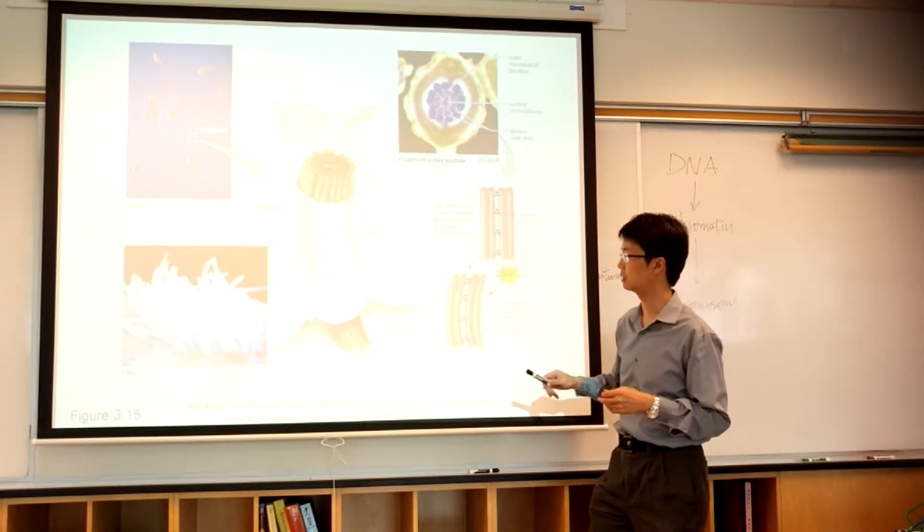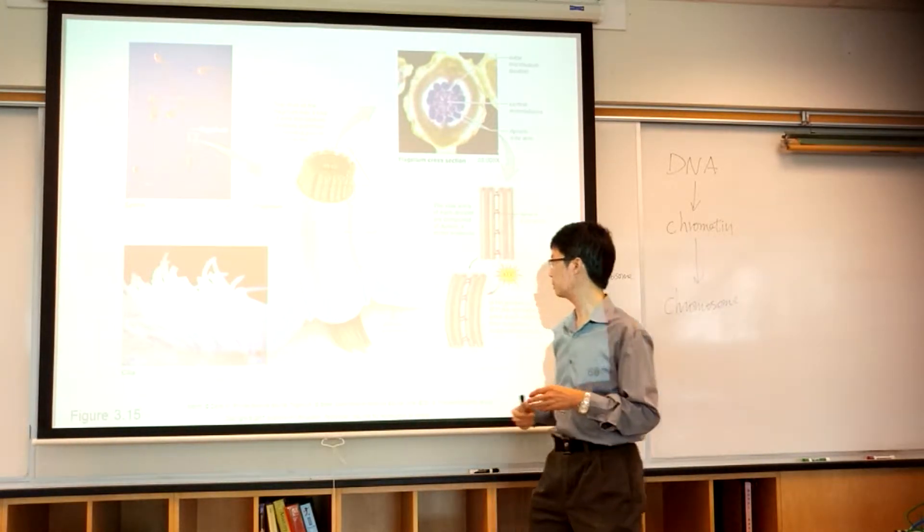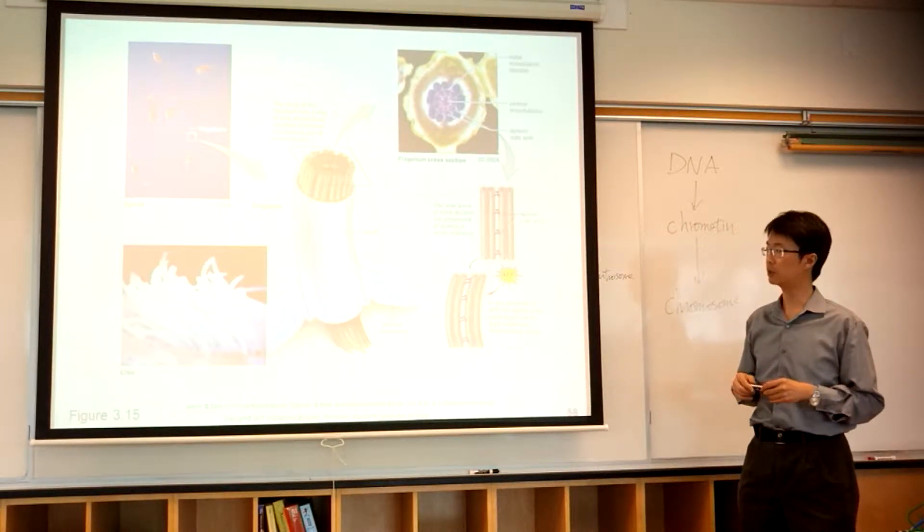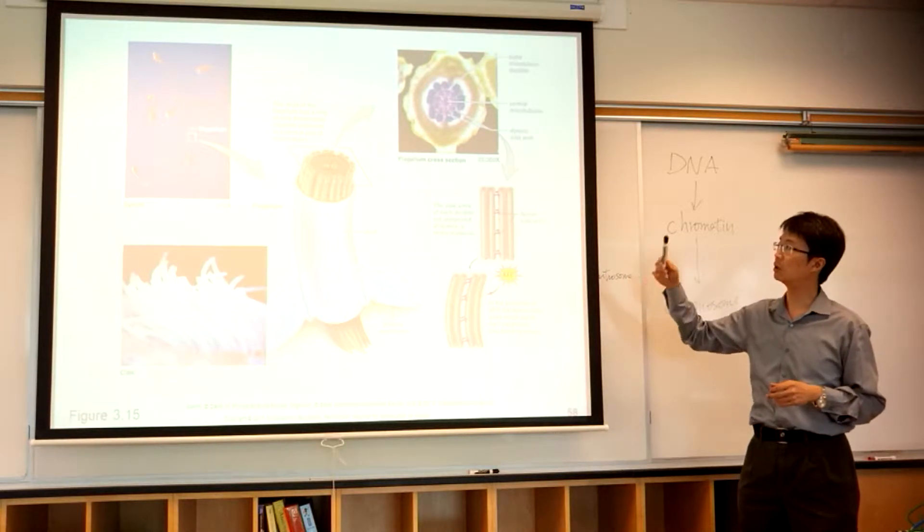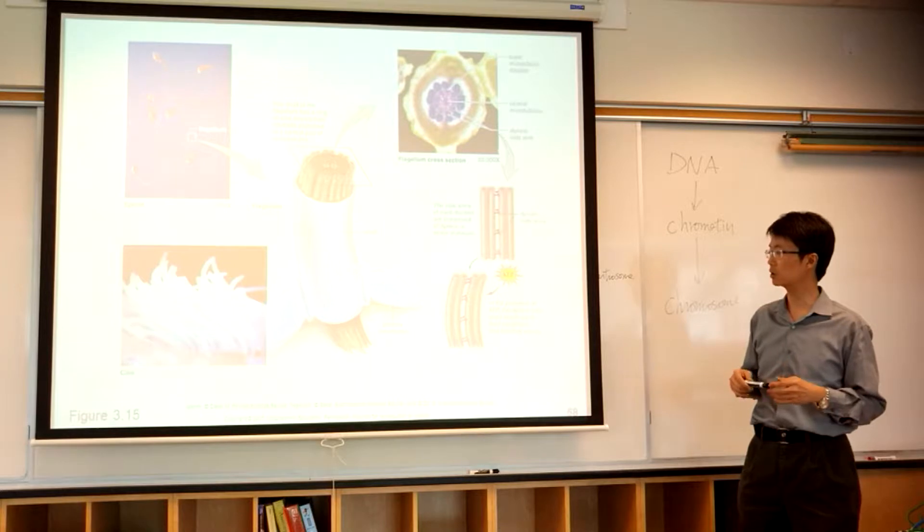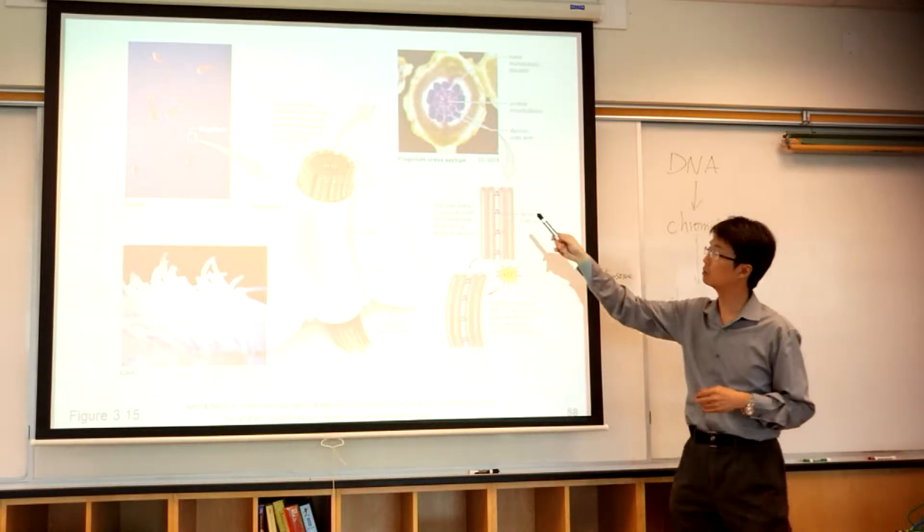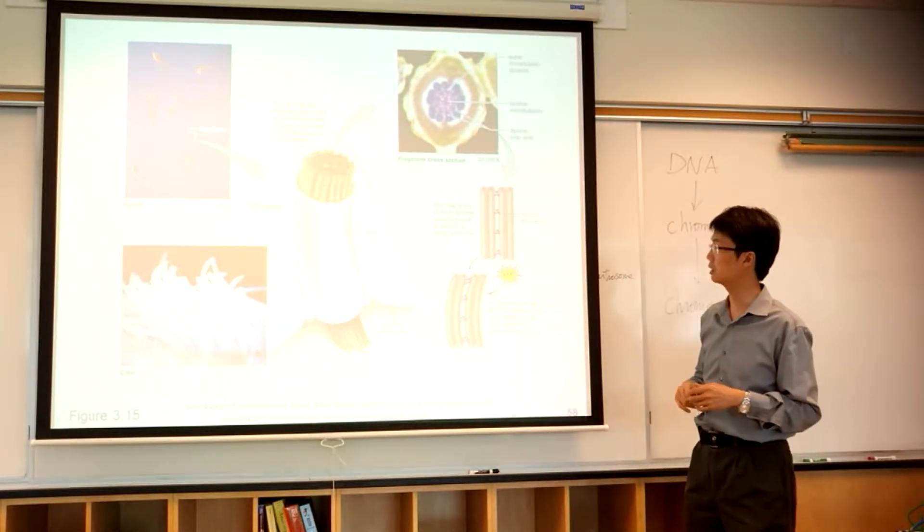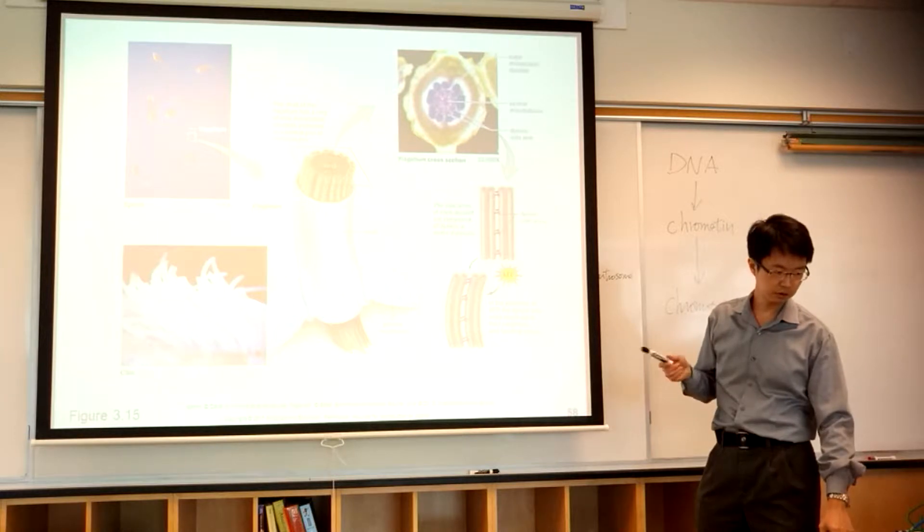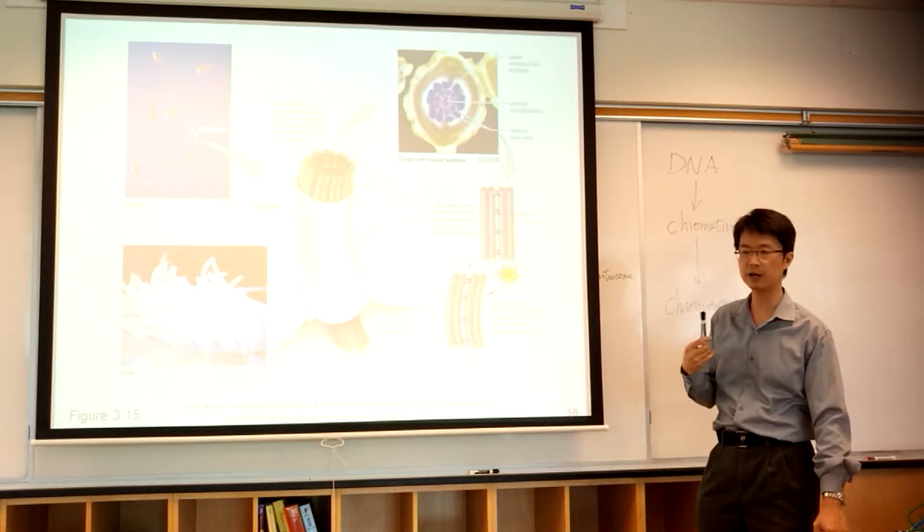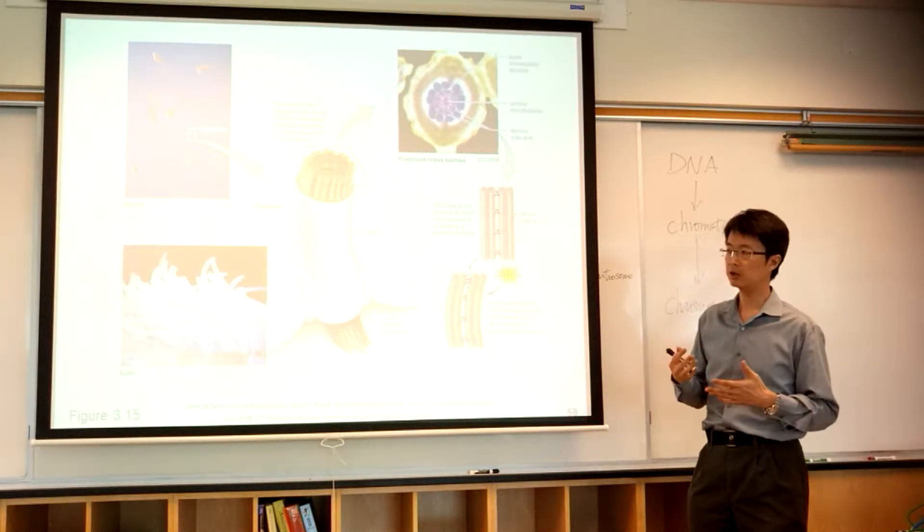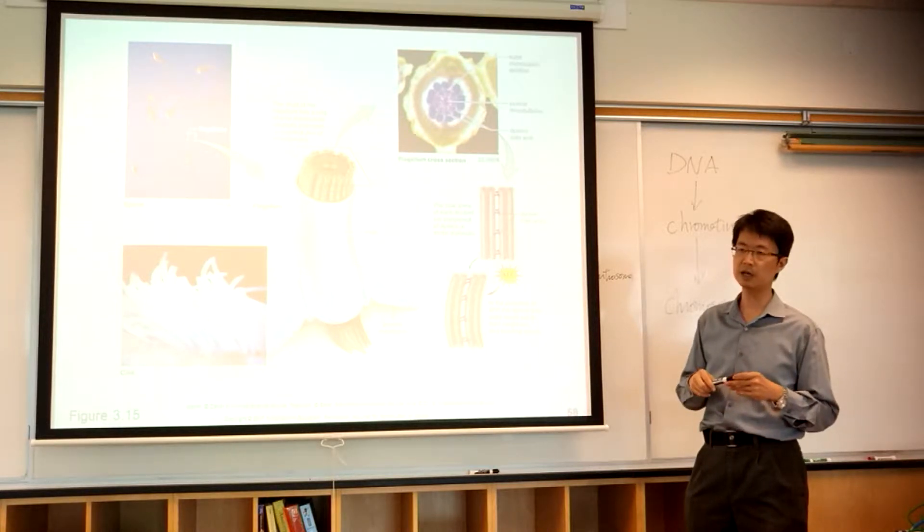And you can find cilia in the windpipe and in the respiratory tract. You don't need to know the structure, the detailed structure, the 9-microtubule doublet or the triplet in the centriole—you don't need to know that. Just need to know flagellum you can find in sperm and bacteria. Cilia, you can find it in the respiratory tract. You can also find cilia in the fallopian tube, which is the uterine tube.